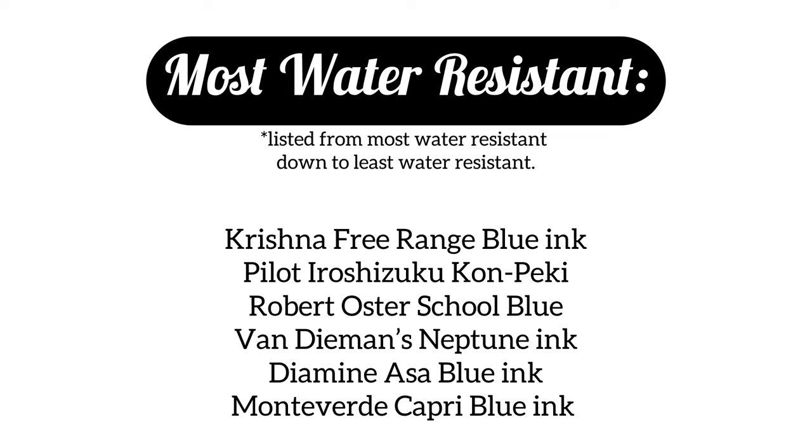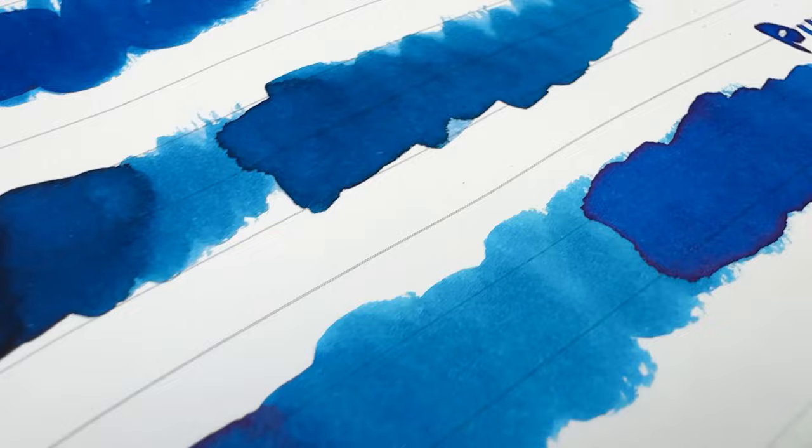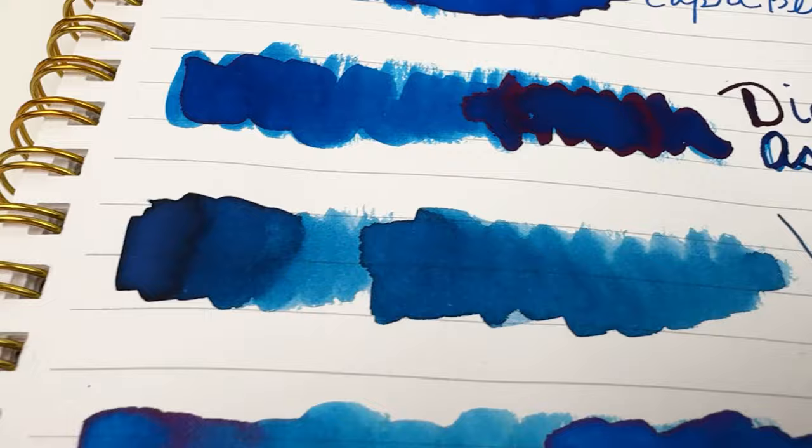Here's a look at the dried ink swatches and writing samples. You can see some of them are giving us some really pretty sheen, with the most significant being the Diamine Asa Blue with that almost hot pink sheen. You've got some interesting shading and unique colors going on too.